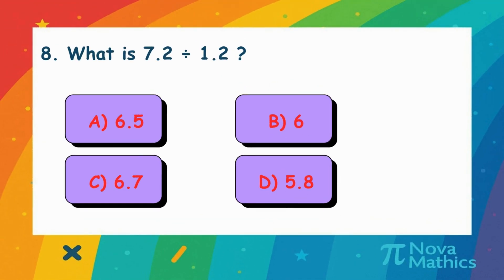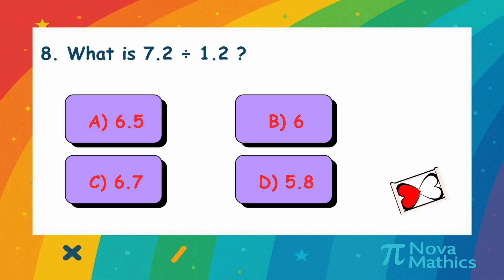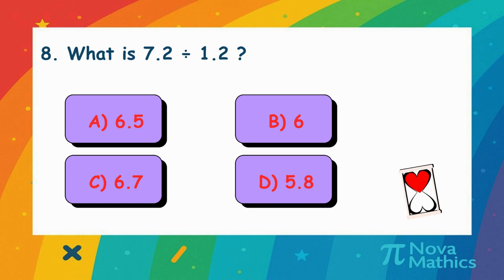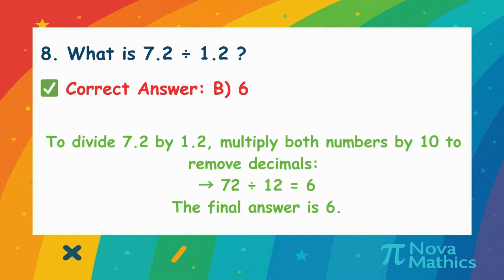7. What is 7.2 divided by 1.2? We want to divide 7.2 by 1.2. Multiply both by 10 to make them whole numbers. 72 divided by 12 equals 6.